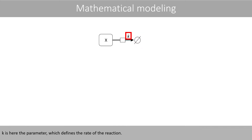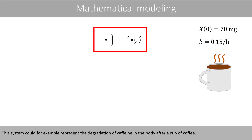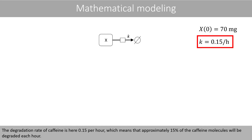K is here the parameter which defines the rate of the reaction. This system could, for example, represent a degradation of caffeine in the body after a cup of coffee. The degradation rate of caffeine is here 0.15 per hour, which means that approximately 15% of the caffeine molecules will be degraded each hour.